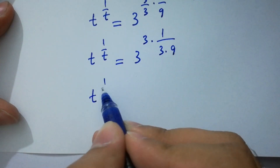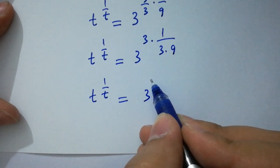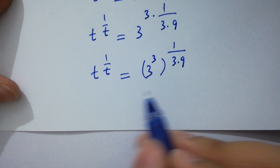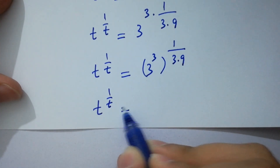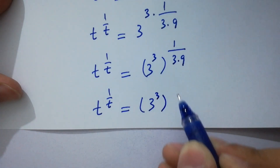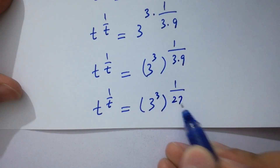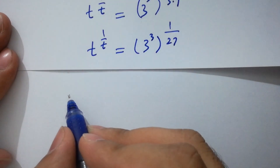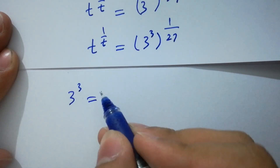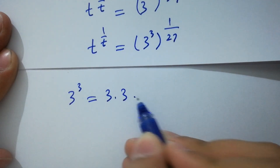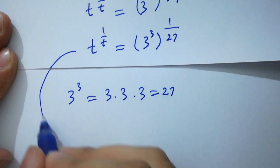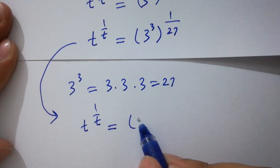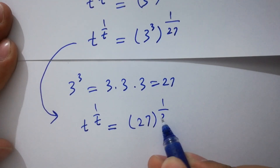So t to the power 1 over t equals 3 to the power 3, raised to the power 1 over 3 times 9, which gives 3 to the power 3 raised to the power 1 over 27. Since 3 to the power 3 equals 3 times 3 is 9, and 9 times 3 is 27, we have t to the power 1 over t equals 27 to the power 1 over 27.